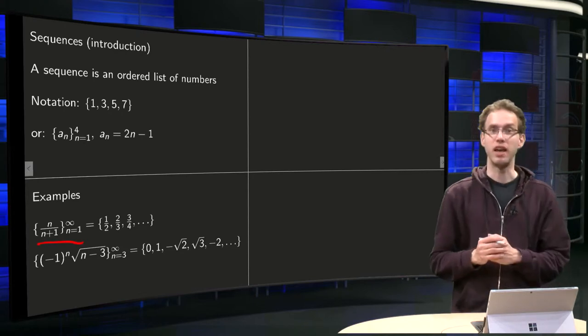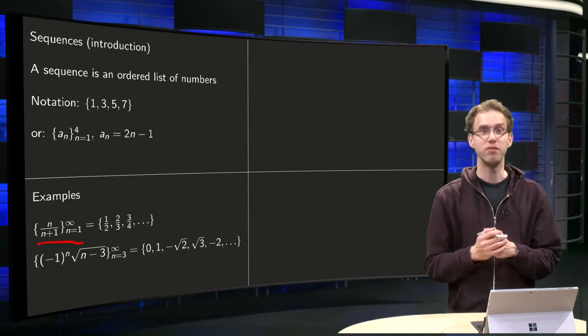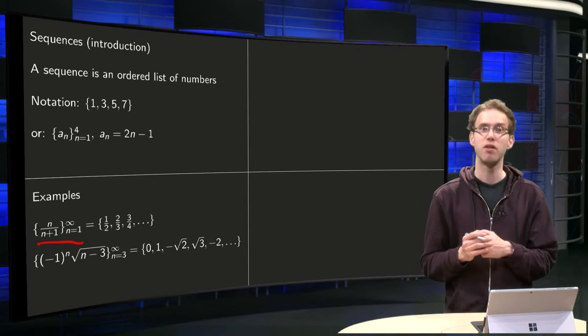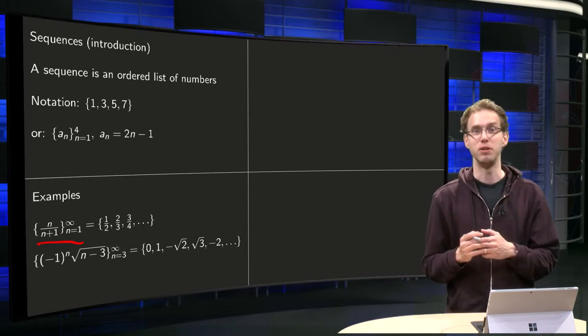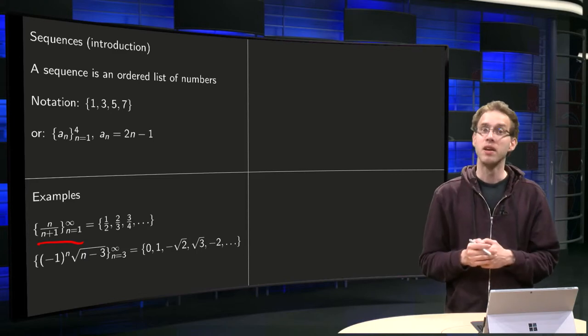a_n equals n divided by n plus 1, starting at 0 until infinity. Well, the first element will be 1 over 1 plus 1 equals 1 half. The second element will be 2 over 2 plus 1 equals 2 over 3, etc.